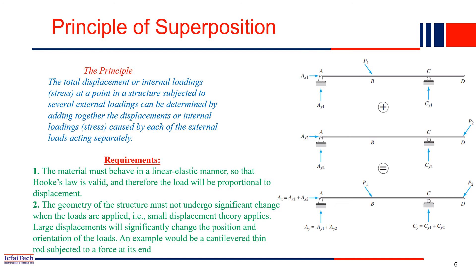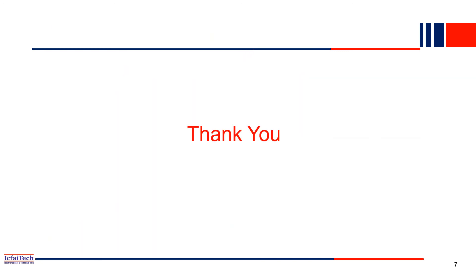The principle of superposition is valid under two conditions. First, the material must behave in an elastic manner — where Hooke's law is valid. Second, the geometry of the structure must not undergo any significant changes when the force is applied. For example, when P1 and P2 are applied, the beam should not deflect too much — only a small deflection is acceptable. When these two conditions are met, then only the principle of superposition is valid. Thank you.